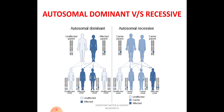Before the classification, let us understand the difference between autosomal dominant and autosomal recessive. In autosomal dominant, if the affected gene comes from either parent — father or mother — the disease will be manifested in the child. In autosomal recessive, the affected gene must come from both parents for the disease to manifest. If it comes from only one parent, the child will be a carrier but the disease will not manifest.